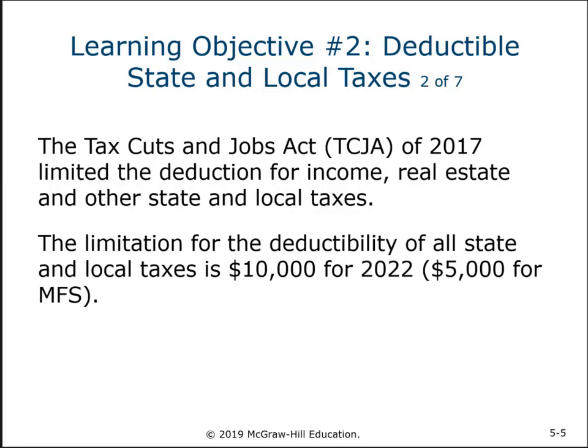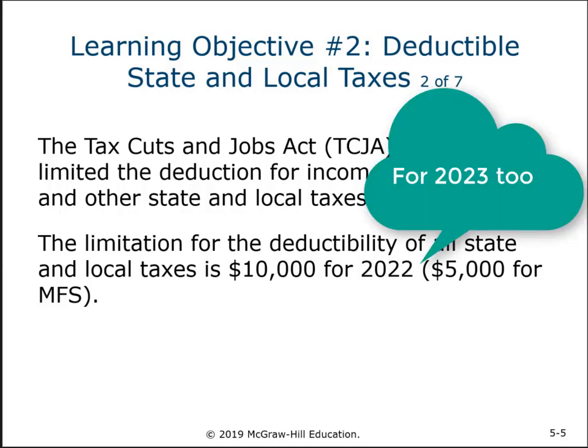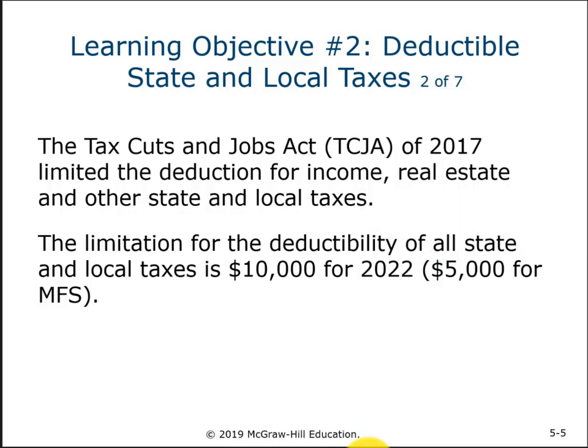There's a limit that applies to all state and local taxes including property taxes, income taxes, and personal property taxes: $10,000. For everyone except married filing separately, the limit is $10,000. Married filing separately is $5,000. This is the first true penalty for married filing separately we've come across — married filing jointly is treated as one individual and still only gets $10,000.